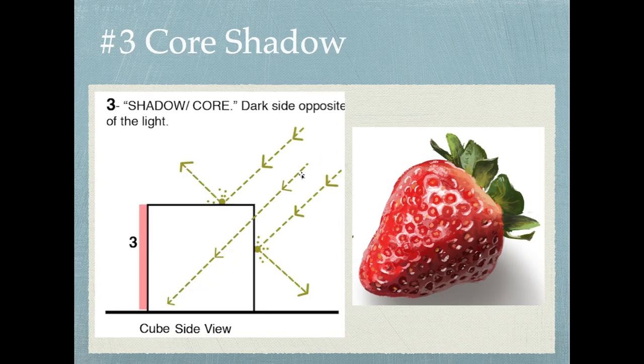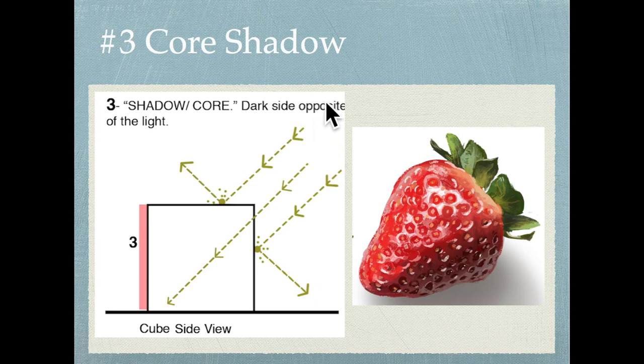Finally, we've got the core shadow. What I did in this image right here is I just used the light rays from the one and the two so that you can see where the three is. A three in the one, two, three read means your shadow side or core shadow. That's the side of a form where there's no impact, and as a matter of fact, it's on the opposite side of where the light's coming from. So it's that simple. One, two, and three.